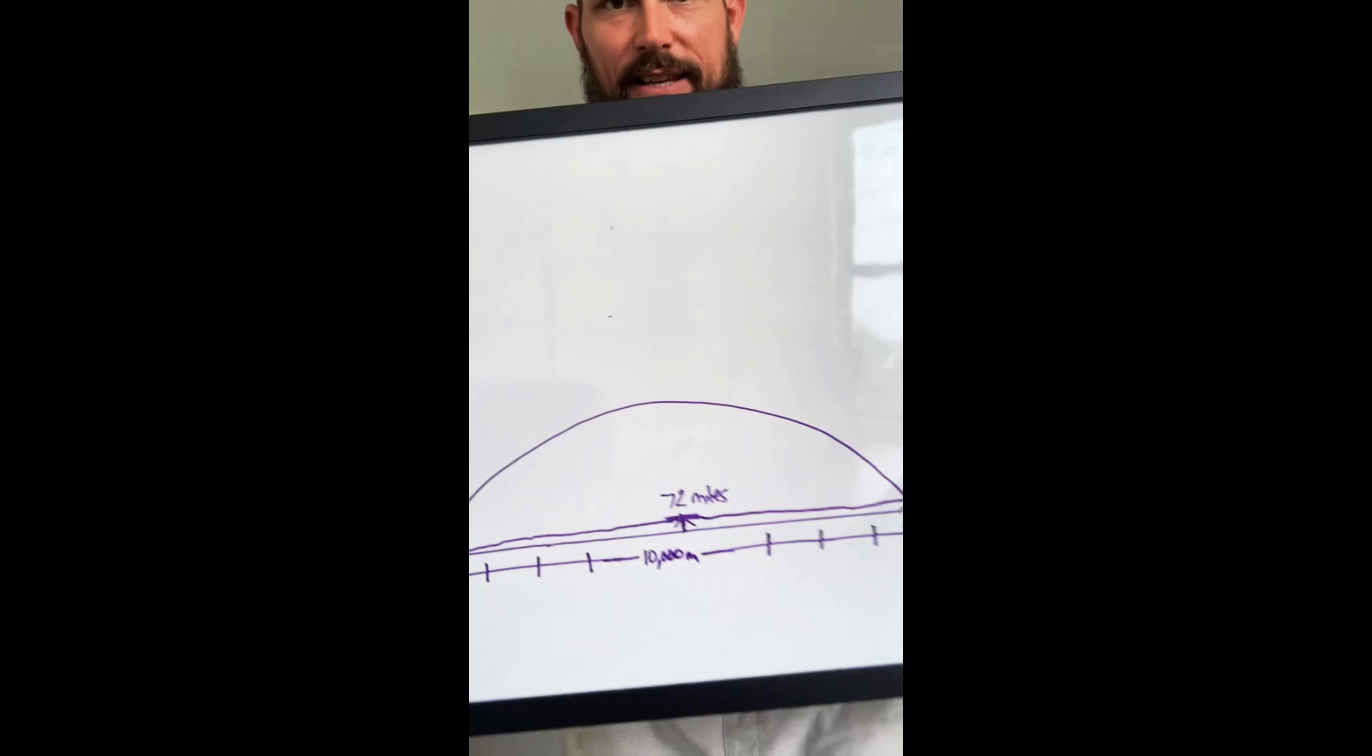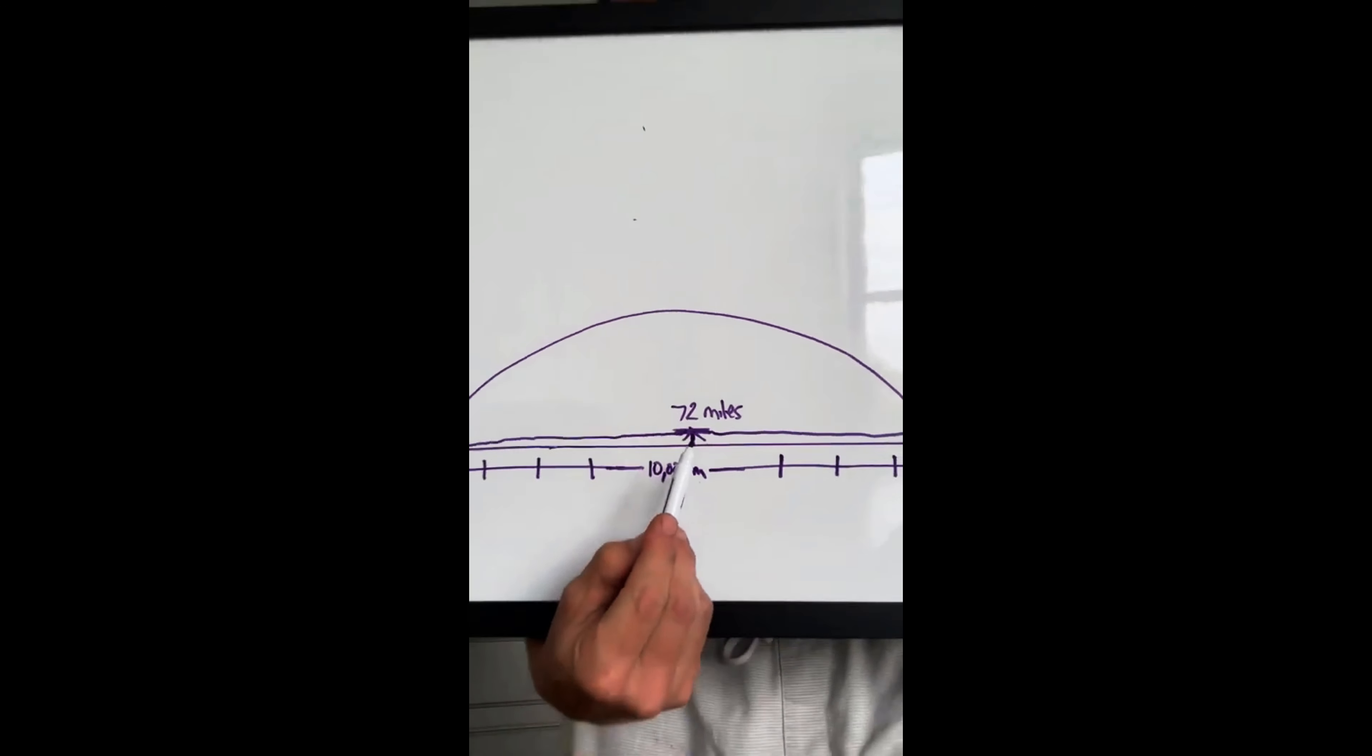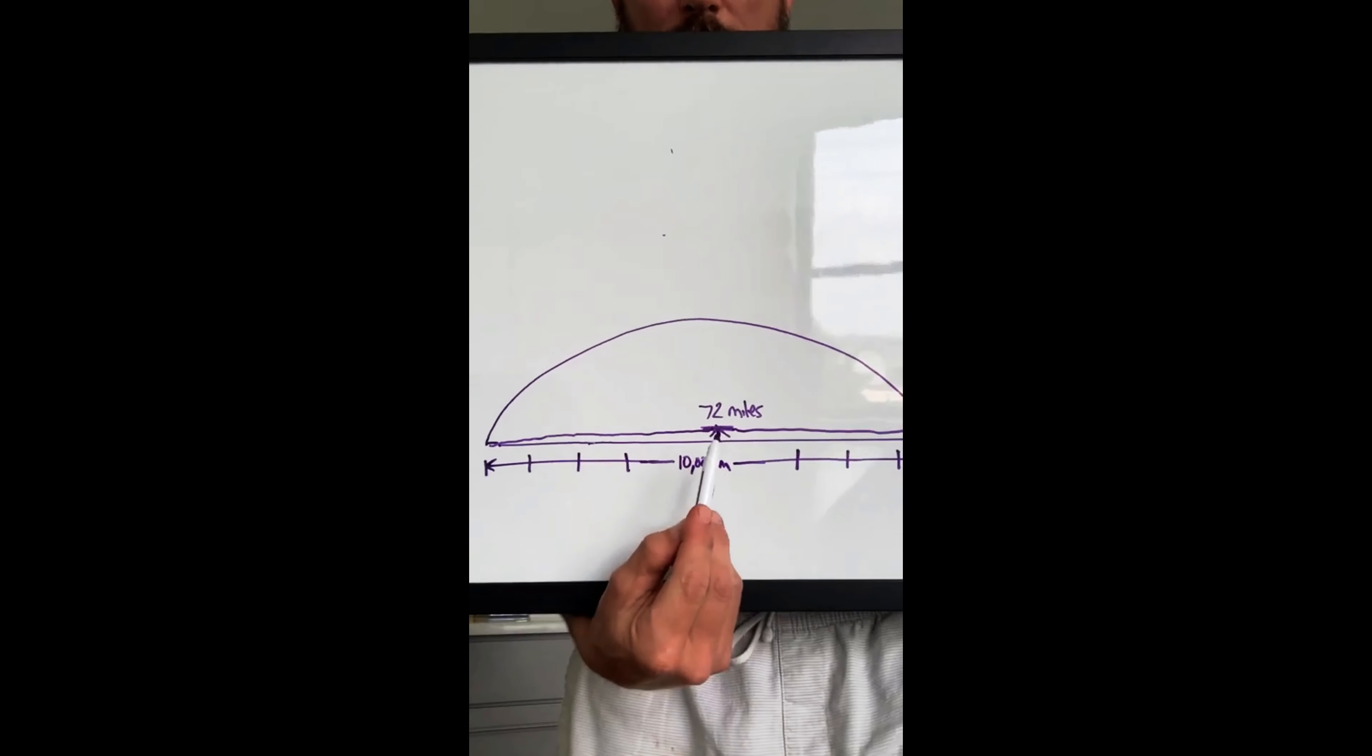Okay, just like this right here, the GoFast GoPro rocket went up 72 miles. So that means there's a 72-mile ceiling here.